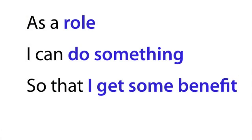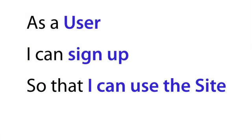User stories have two parts to them: the title and the acceptance criteria. The title is formatted as: as a role, I can do something so that I can get some benefit. For example: as a user, I can sign up so that I can use the site. So we now see the who, the what, and the why.